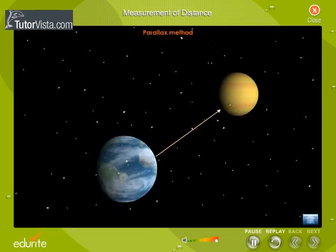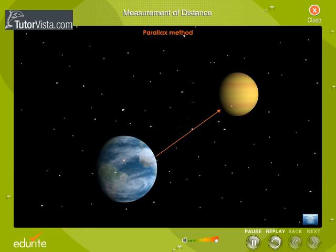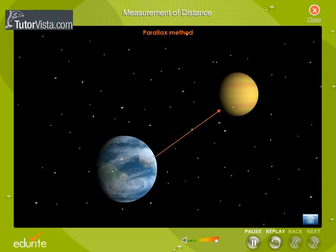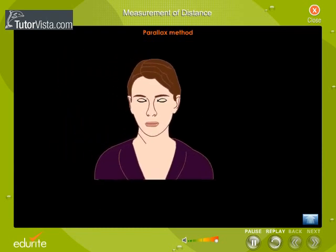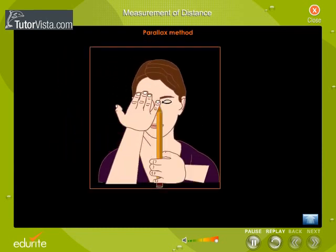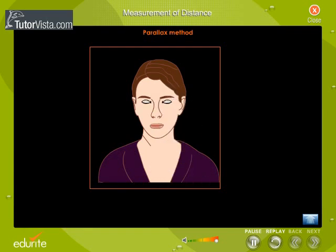Parallax method. The parallax method is commonly used to measure the distance of astronomical objects from the Earth. The illustration given here will help you to understand the meaning of parallax. Hold the pencil in front of you and look at it by closing the right and left eye alternately. What do you observe? We observe a shift in the position of the pencil with respect to the background. This shift is known as parallax.